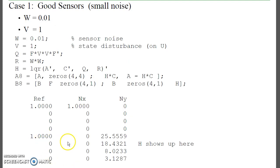Starting out, if I have a good sensor, where the sensor noise is small, 0.01, and I have state disturbances, I'll find Q and R, plug those into my LQR methods to find the observer gains, and it gives me a Kalman filter.